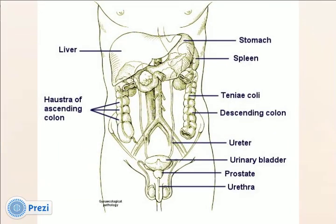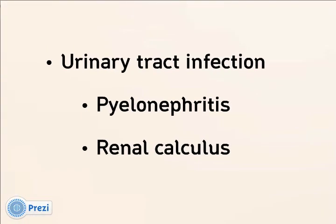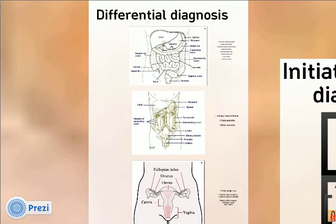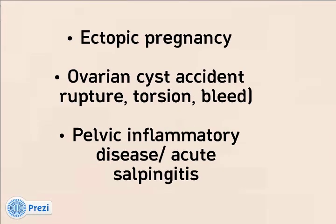A second category are renal tract causes. Of these, the one most likely to mimic appendicitis would be pyelonephritis, giving the combination of fever with abdominal pain. Finally, in all women, gynaecological causes should be considered. The most life-threatening of those being a right-sided ectopic pregnancy, which should always be excluded.